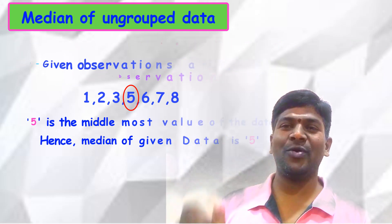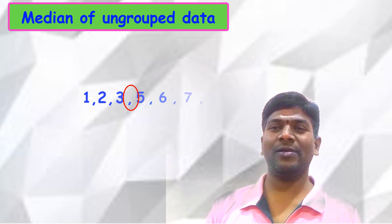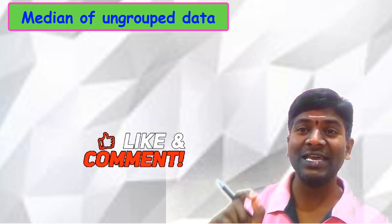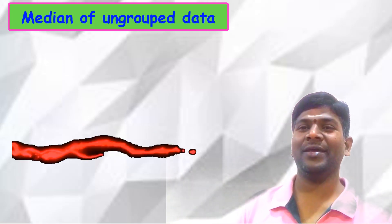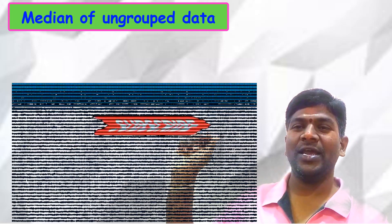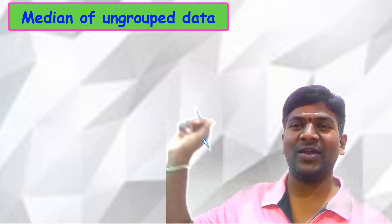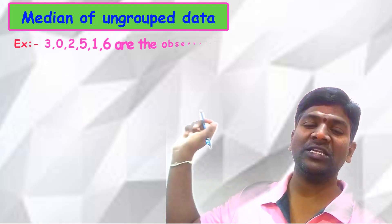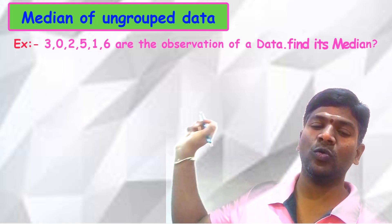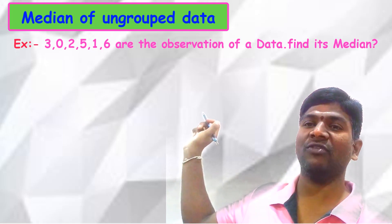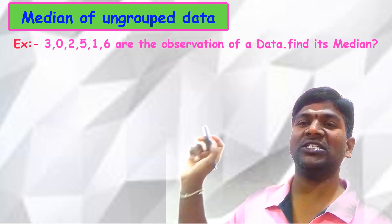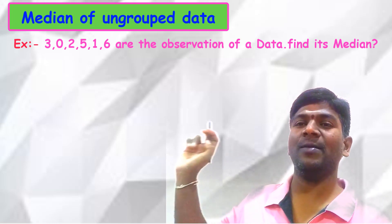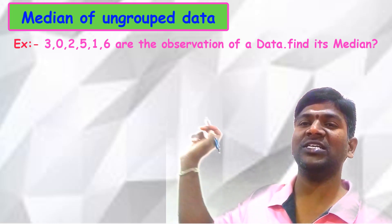Let us take one more example where the number of observations is an even number. The observations are: 3, 0, 2, 5, 1, 6. Find the median of this data.